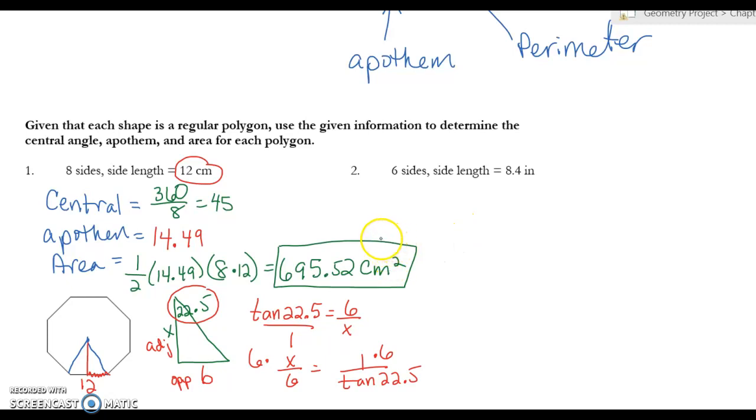Okay, so these are definitely problems that are a little more time consuming because you have to find the apothem, but it's something that's doable. So for step two, I want you to see if you can find your central angle and try to find your apothem. If you're stuck, at least draw your triangle like I did right here, and then press play when you think you have it.